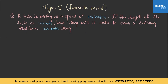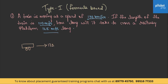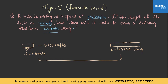Let us read the first question: A train is moving at a speed of 132 km per hour. If the length of the train is 110 meters, how long will it take to cross a railway platform 165 meters long? The distance will be L plus B, that is 110 plus 165, which equals 275 meters.